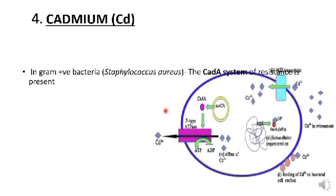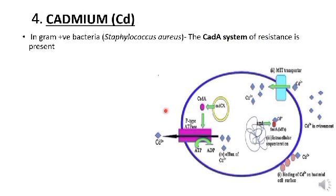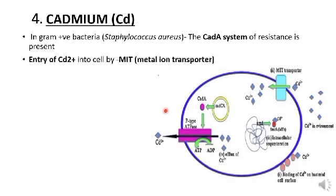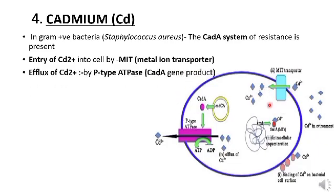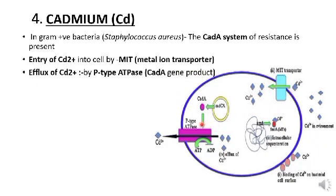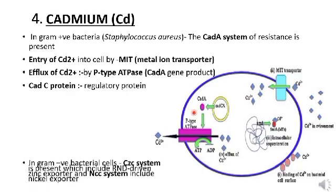Next is cadmium. In gram-positive bacteria such as Staphylococcus, the CadA system of resistance is present. It consists of MIT, which is a metal ion transporter, which allows the entry of cadmium into the bacterial cell. The efflux of cadmium is by the p-type ATPase, which is a gene product of the cadA gene. CadC protein is a regulatory protein which controls the expression of other genes.